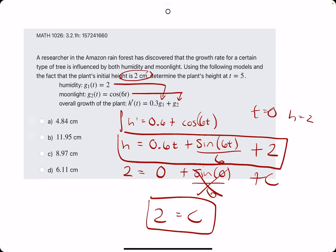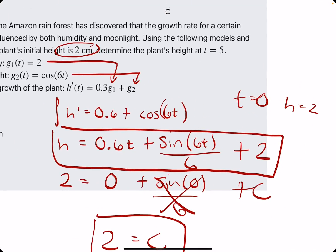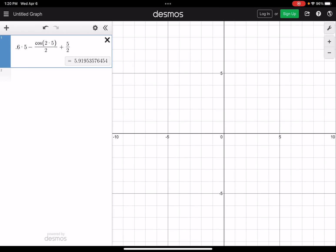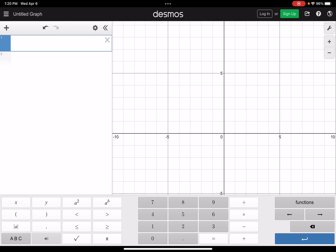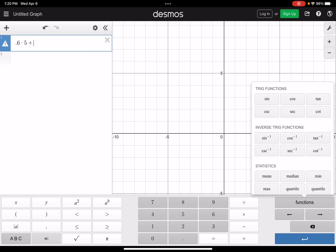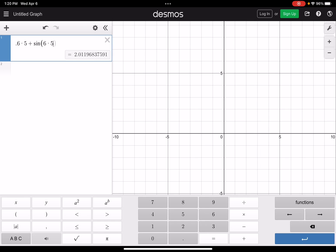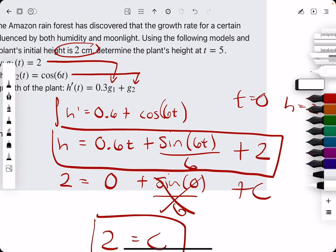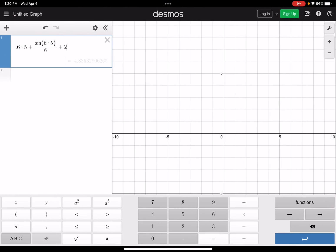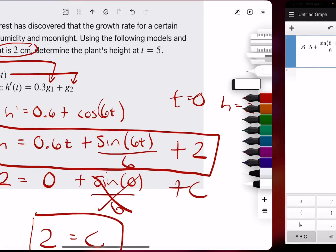Now we just plug in 5 to this equation. So opening up Desmos, 0.6 times 5 again, plus in this case sine of 6 times 5, divided by 6 I believe, and then plus our C value of 2. As a result, we get 4.8.